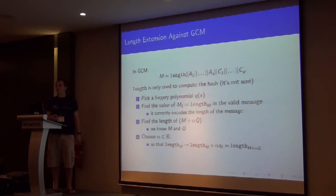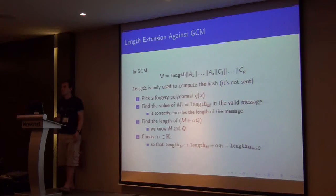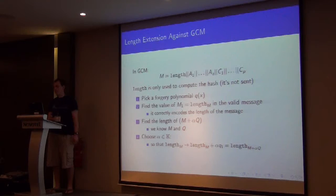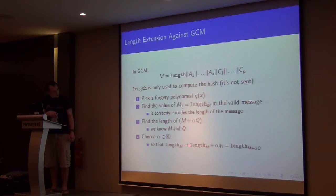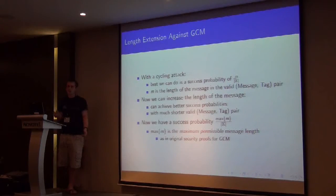And we need to know what the value of the length field is in the valid message. This is easy. We can see how long the message is. So we can work out what the length field should be. As long as we can tell where the associated data and the ciphertext starts. And we need to know what length we'd like this value to encode. So that's the length of m plus alpha q. And that's easy because we know the length of m, and we know what q is because we chose that. And we just need to pick the right alpha. So that when we forge, the length of m becomes the length of m plus alpha q.